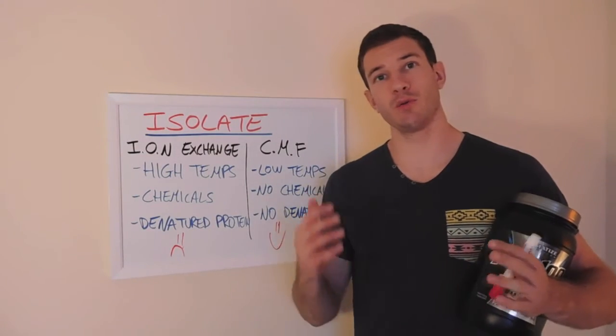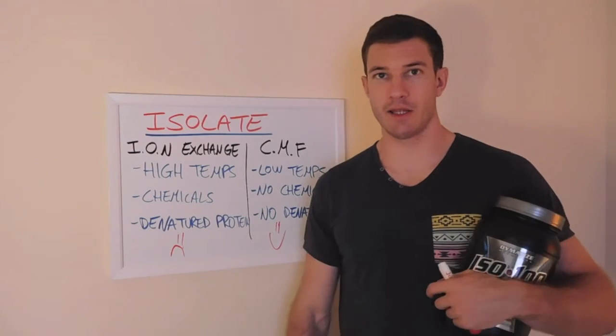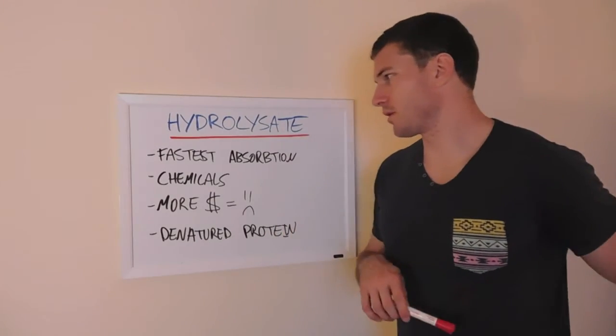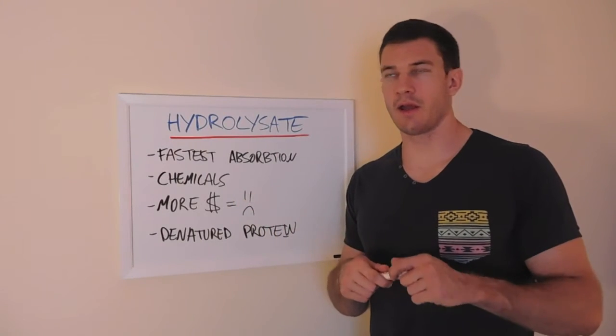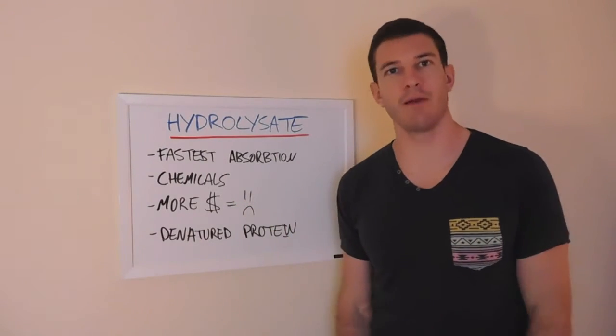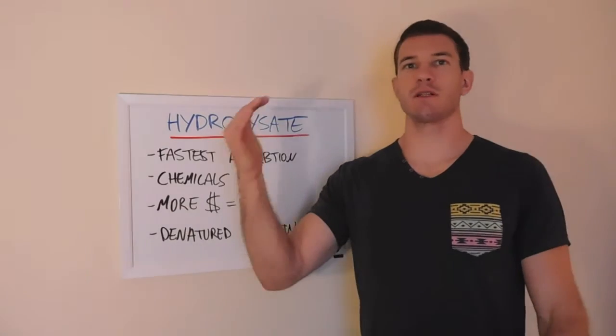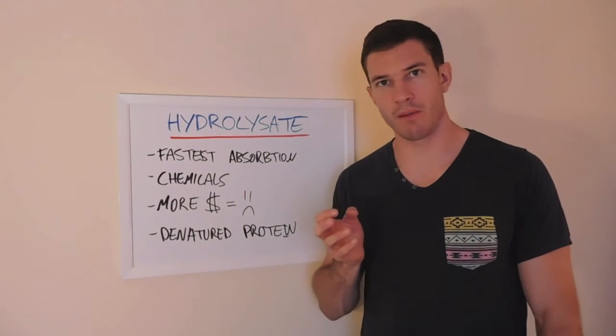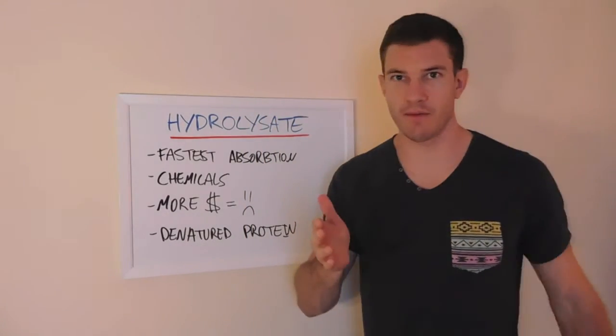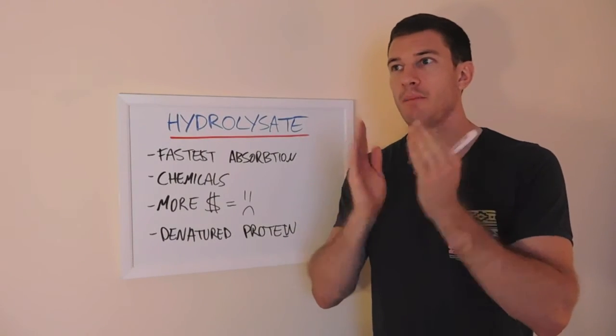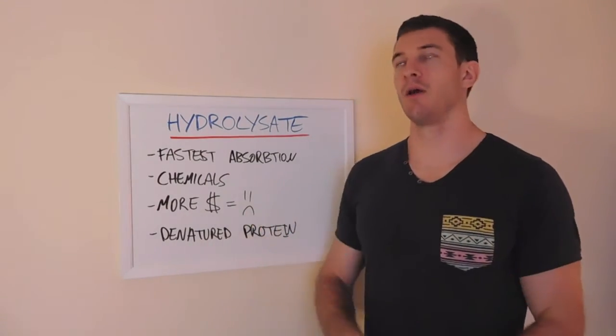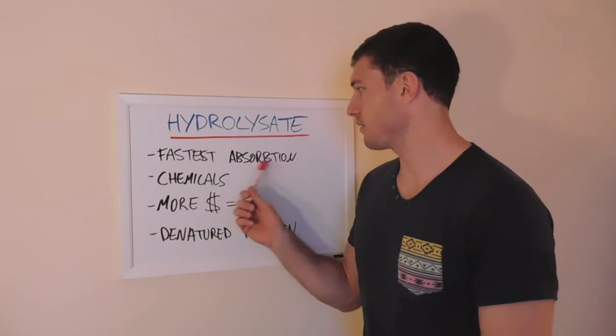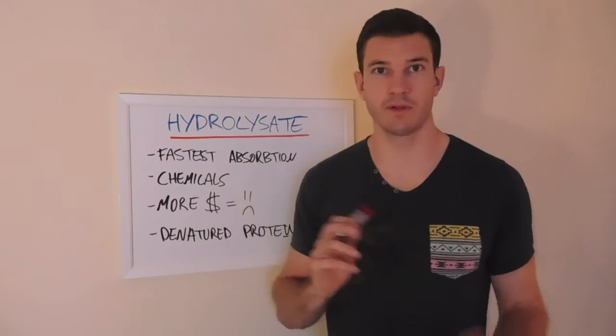Now we're going to move on to a whey hydrolysate. The final protein that we're going to talk about today is a hydrolysate or hydrolysate, whatever you want to call it. Basically, this is taking the whey isolate that we talked about before and it's chopping it further into peptides. It's going to chop it up into predigested peptides, which means that it's going to be the fastest absorbed type of protein.